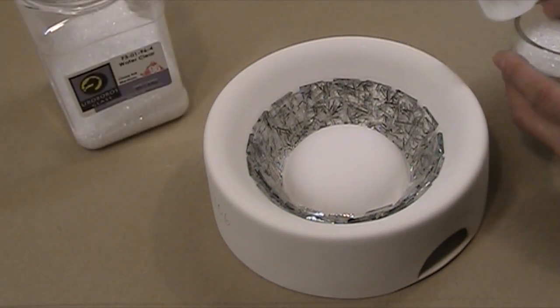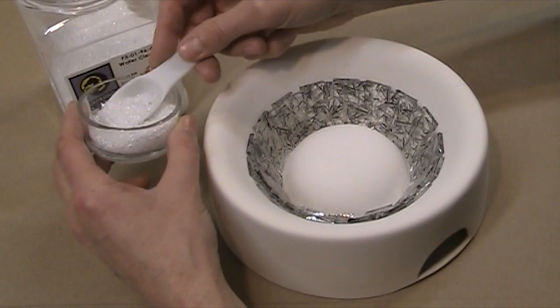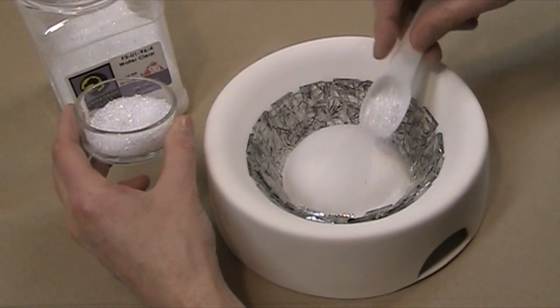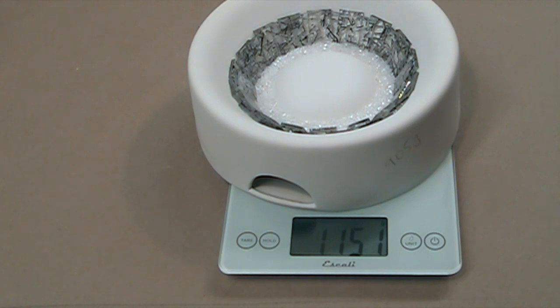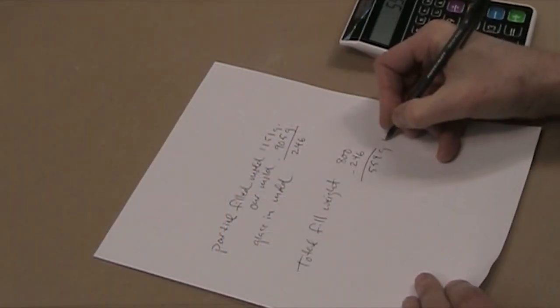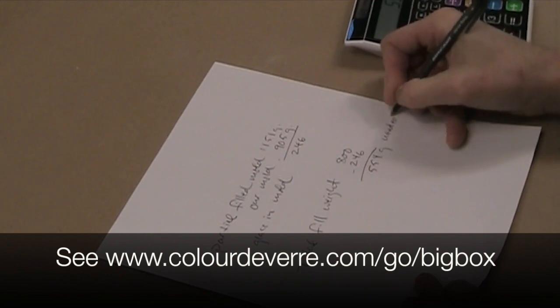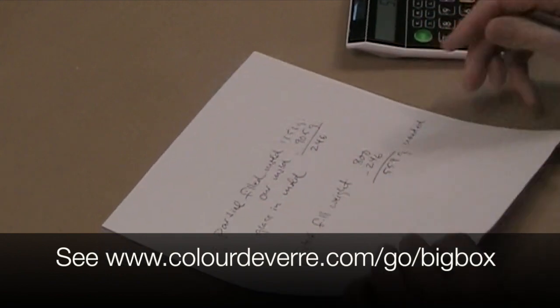We add 40 grams of frit to stabilize the tiles. Next, we weigh the partially filled mold to calculate how much additional glass is needed. This simple calculation is described in our project sheet.